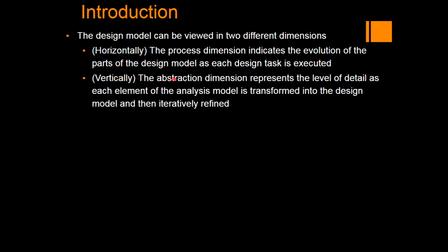In vertical design, the abstraction dimension represents the level of detail as each element of the analysis model is transformed into the design model and then iteratively refined. In the vertical dimension, a particular task that was earlier in the analysis model is now converted into a design model, and this design is iteratively refined level by level until a final conclusion is reached about that particular part of the design model. You take one task and refine it until we get to a further product which cannot be refined further. That is the concept of the vertical model.